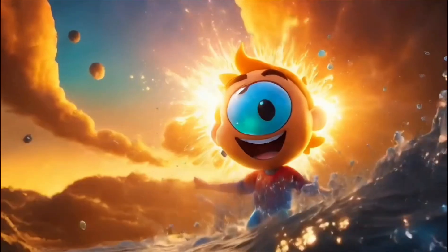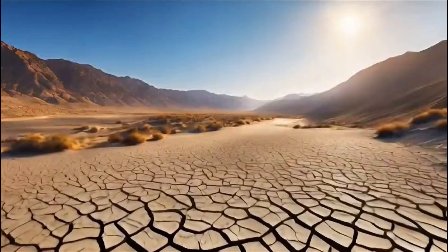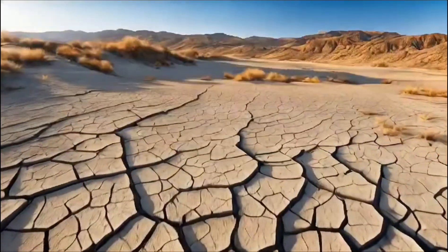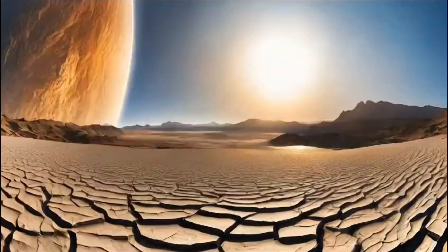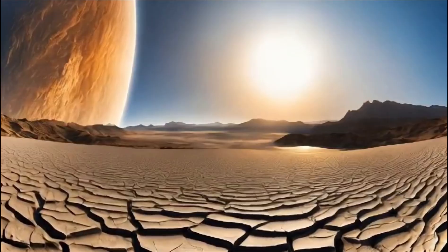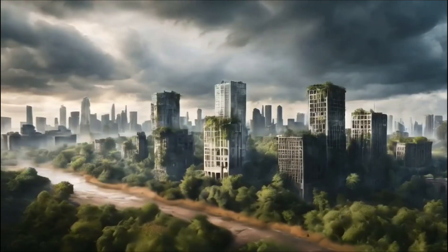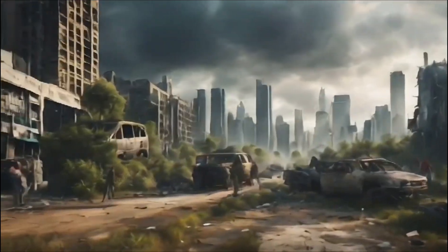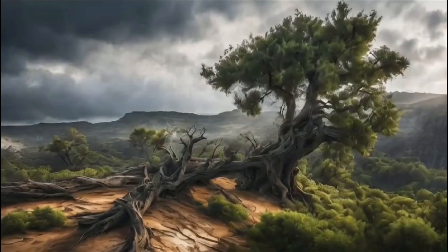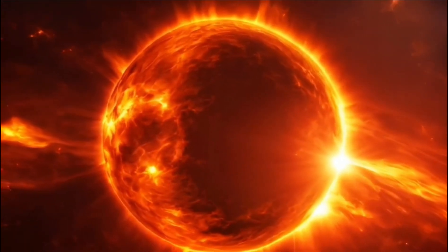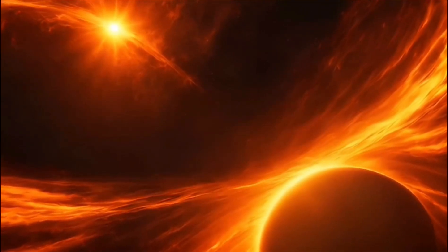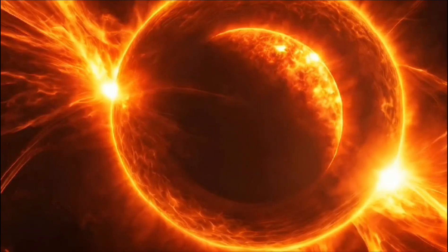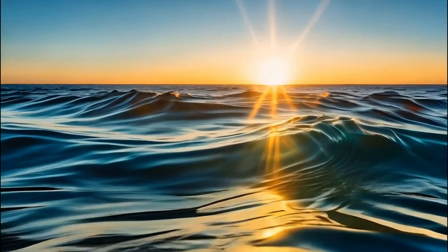In conclusion, pouring all of Earth's water onto the Sun wouldn't extinguish it. Instead, it would create a massive explosion due to the rapid breakdown of water into hydrogen and oxygen, fueling even more nuclear fusion. While it wouldn't permanently alter the Sun, it could result in solar storms that might wreak havoc on Earth's technology and climate.